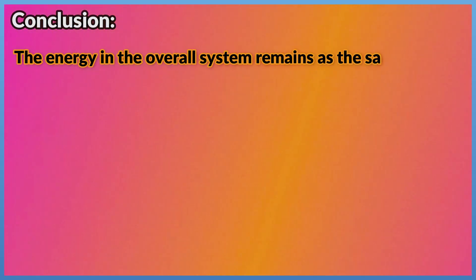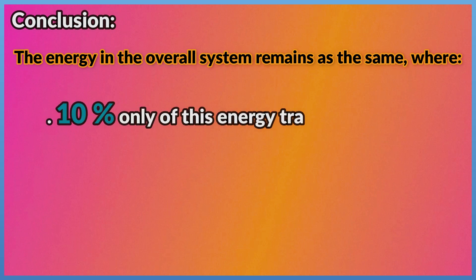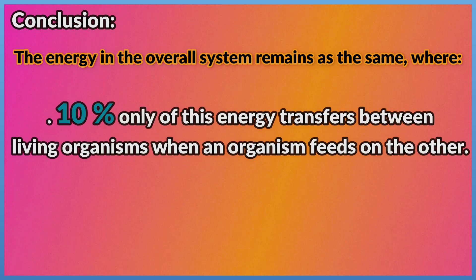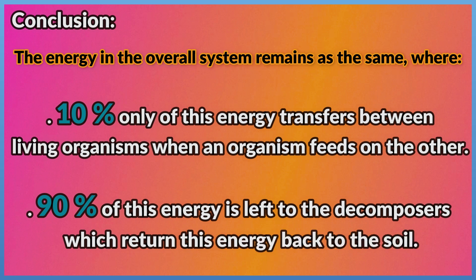Conclusion: The energy in the overall system remains the same, where only 10% of this energy transfers between living organisms when one organism feeds on another. 90% of this energy is left to the decomposers, which return this energy back to the soil.